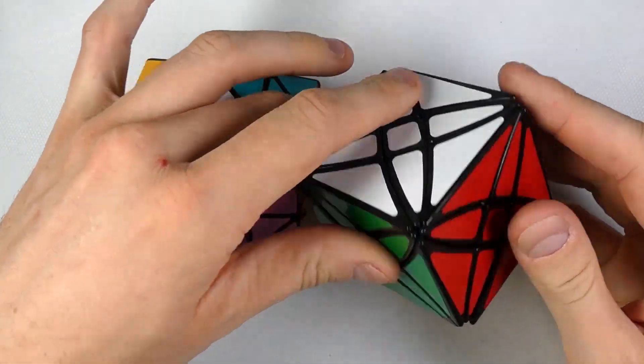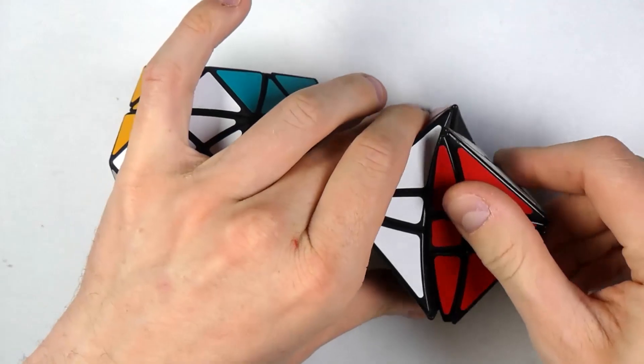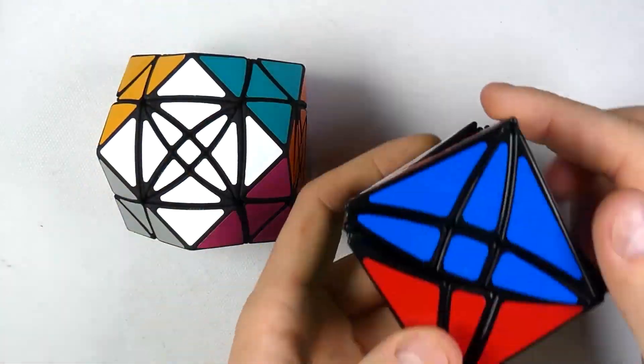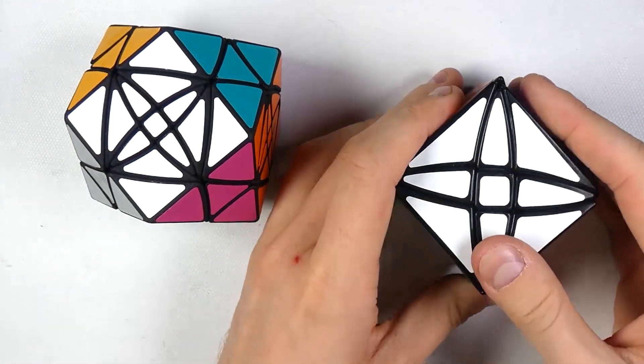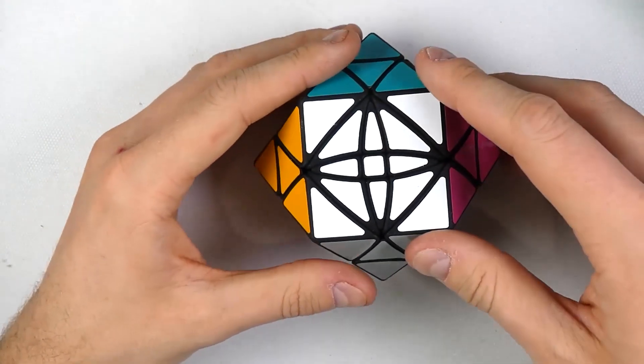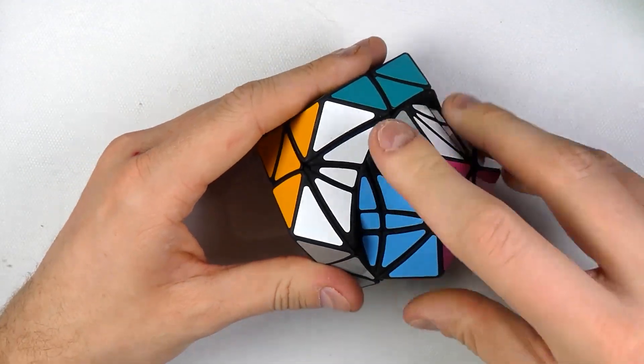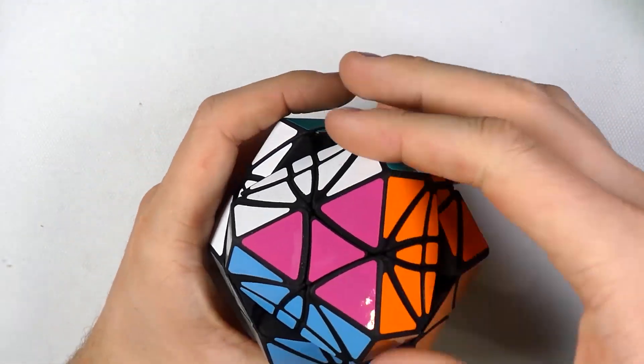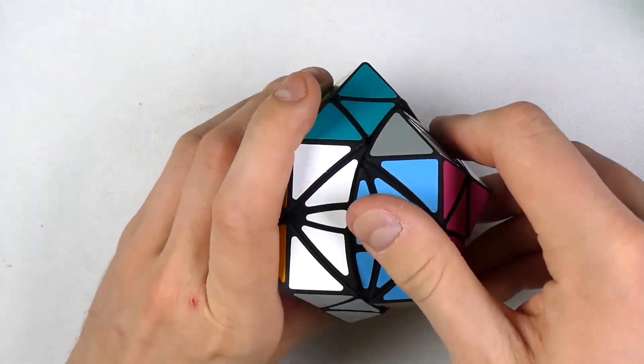The first one is the Rex cube, which is a corner turning cube like this. But first, let me just show you the corner turns right there. Same turns as on that Rex cube.